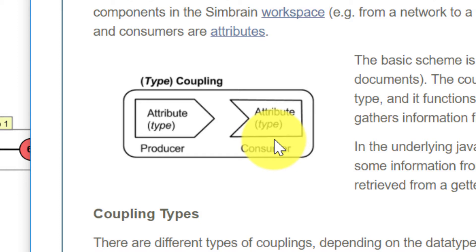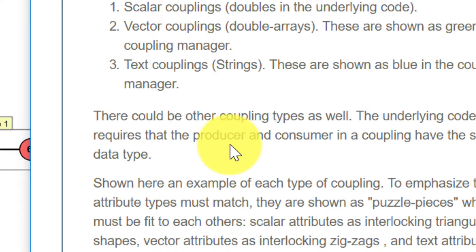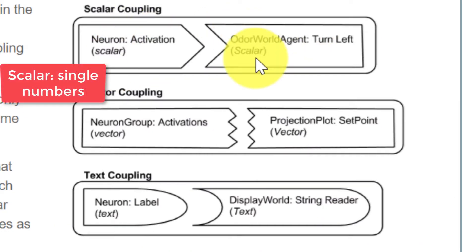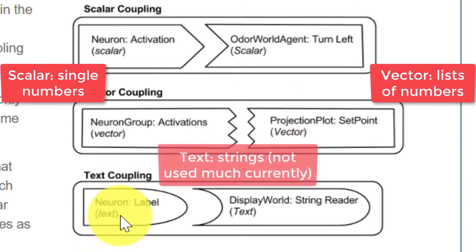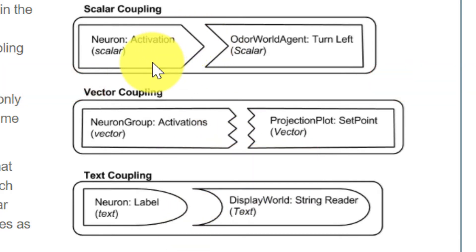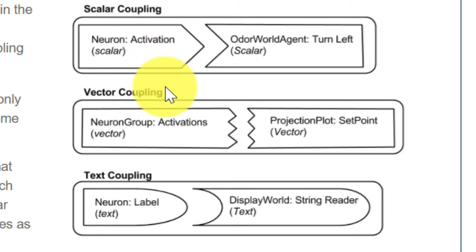Attributes have types, and to have a coupling you've got to have a producer and a consumer of the same type, which we represent here with these shapes. So you have to have a scalar producer attached to a scalar consumer, a vector producer attached to a vector consumer, or a text producer attached to a text consumer. You couldn't have a scalar producer with a vector consumer. This produces three types of coupling: a scalar coupling, a vector coupling, and a text coupling. In the future, we could have other types as well.